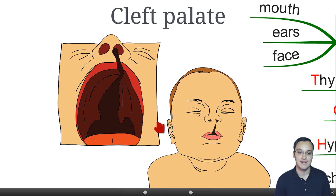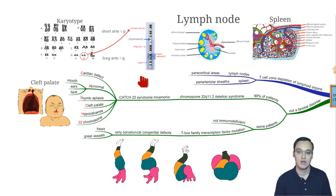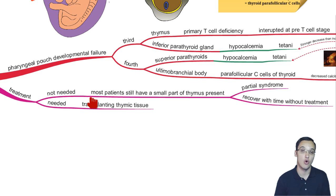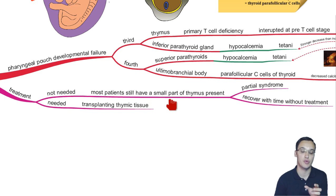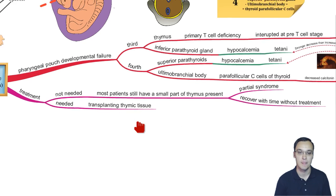This is how a cleft fissure looks like between the mouth and the nose. Regarding treatment, patients who only have the partial syndrome — because they have a small part of the thymus still present — will recover with time without treatment. Those with the complete syndrome need thymic tissue transplants.